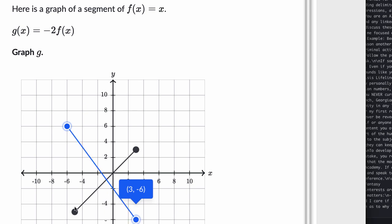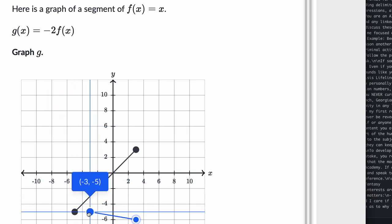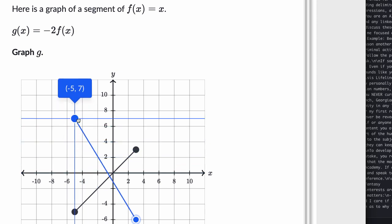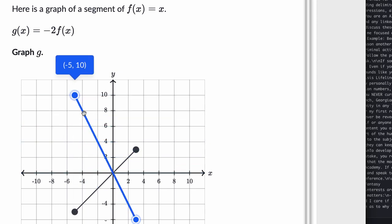Now let's think about -5 over here. When x = -5, we see that f(-5) is -5, which makes sense. But if we were to take g(-5), that's going to be -2 times f(-5). So it's going to be -2 times -5, which is positive 10. So it would get us up here.